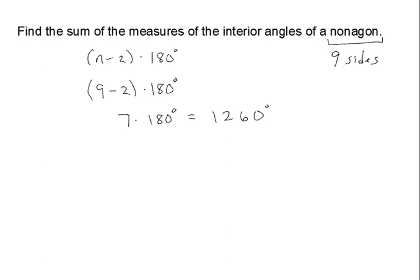7 times 180 degrees turns out to be 1,260 degrees. Remember, that is the sum of all nine angles in the interior of that nonagon.